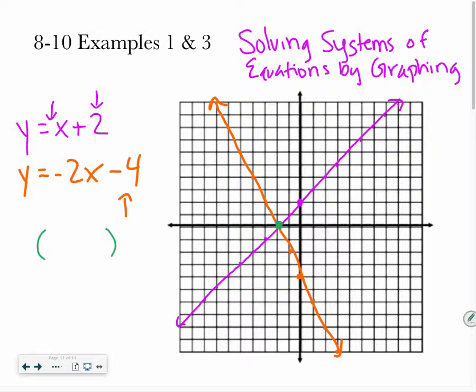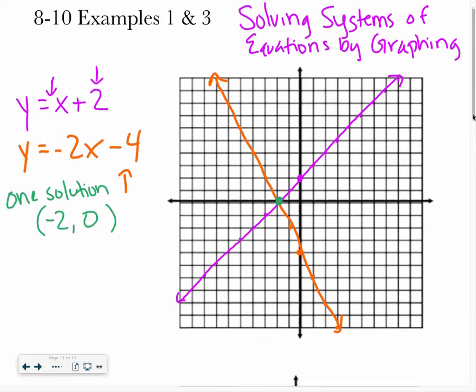So what you do is your answer is the graph plus you specifically list where that intersection occurs. So there's one solution, and it's at negative 2, 0. There's one solution, and that one solution is negative 2, 0.